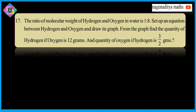Once again, let me read out the problem. The ratio of molecular weight of hydrogen and oxygen in water is 1 is to 8. Set up an equation between hydrogen and oxygen and draw its graph. From the graph, find the quantity of hydrogen if oxygen is 12 grams and quantity of oxygen if hydrogen is 3/2 grams.